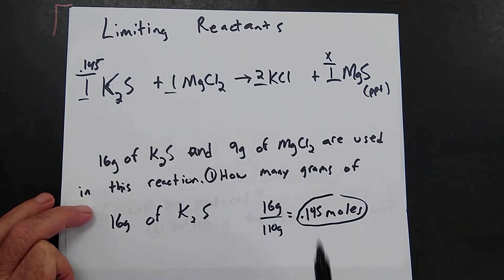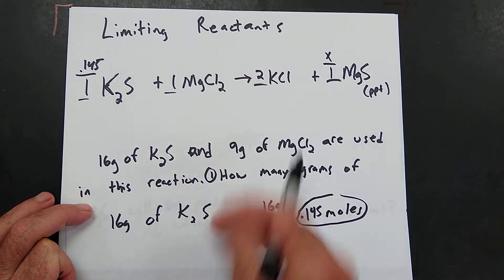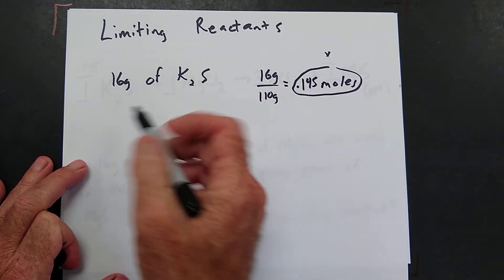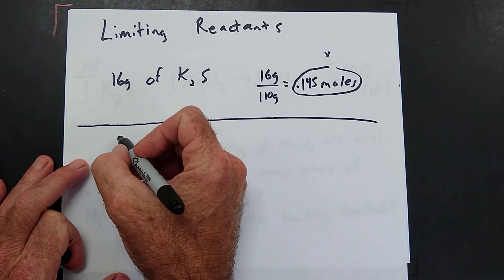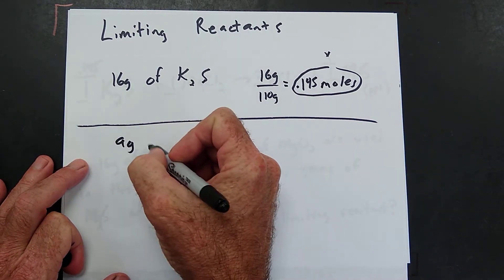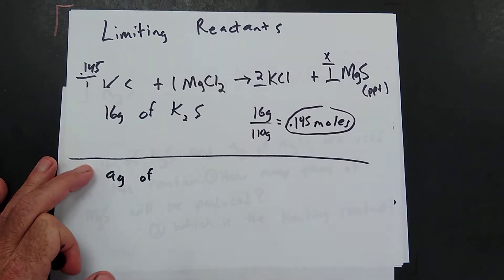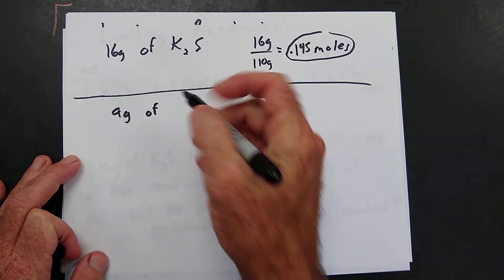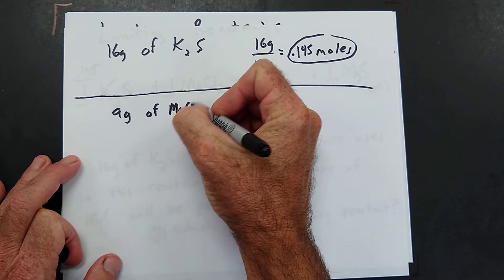Now, what if we use the 9 grams of magnesium chloride? So we're just going to work the problem again. For this time we're going to work it with the 9 grams of magnesium chloride.